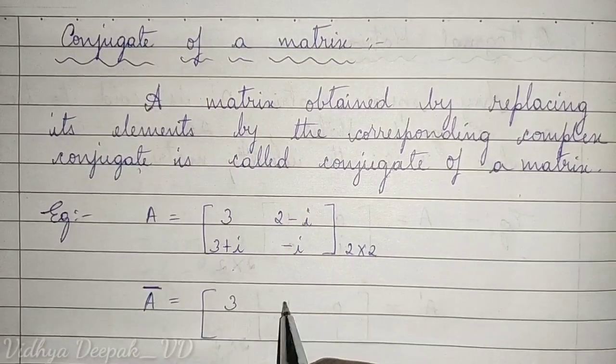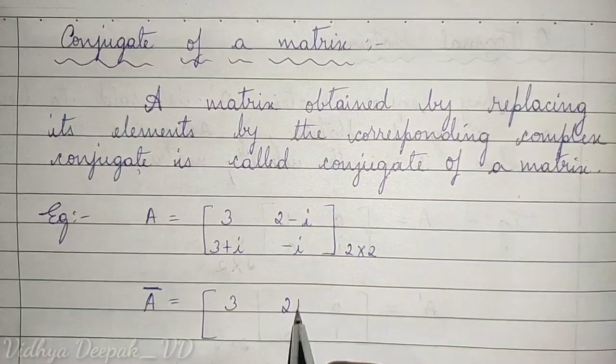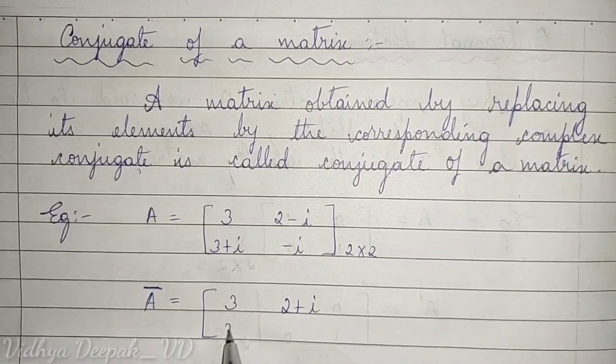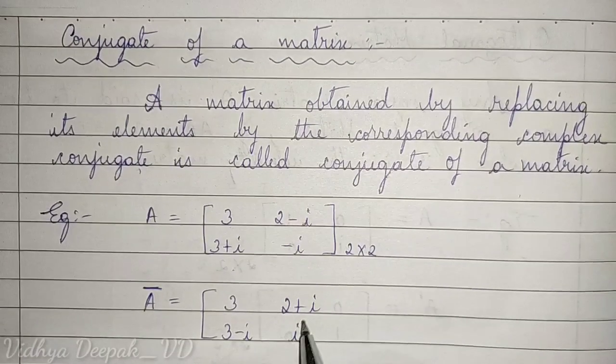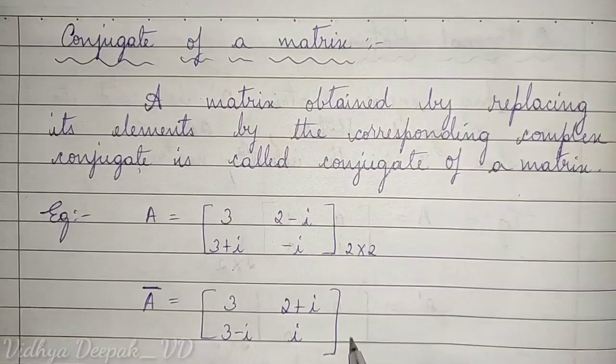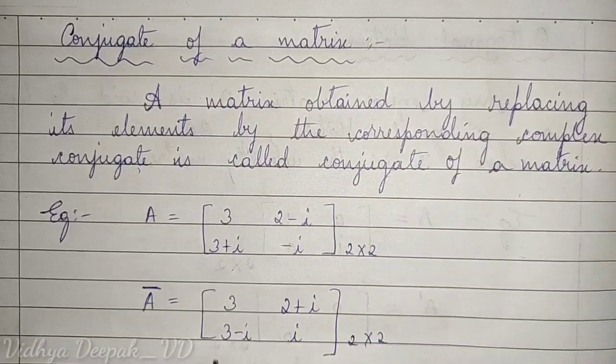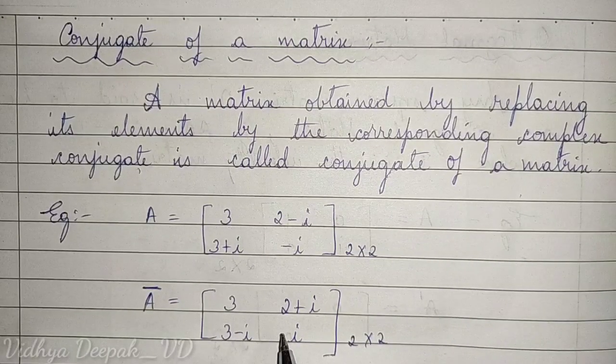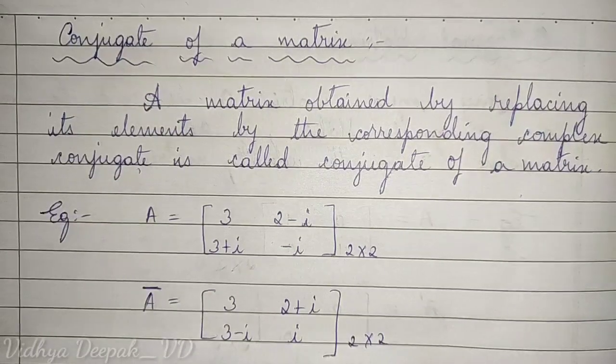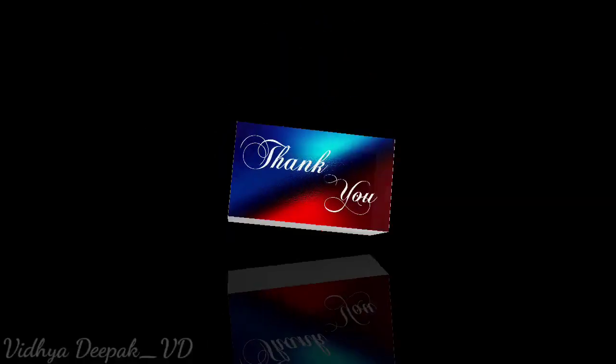That is, 3 + 2i, sign is changing to 3 - 2i. 3 + i becomes 3 - i, and -i becomes +i. This is your conjugate of a given matrix A. Thank you.